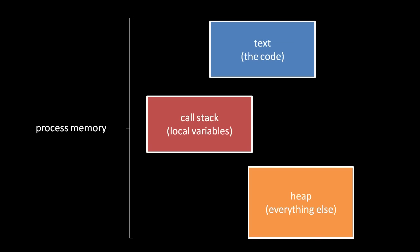Each process uses a portion of its memory for a stack, for a heap, and for storing the process's code itself, in a section confusingly called the text section, even though the code is in binary form.